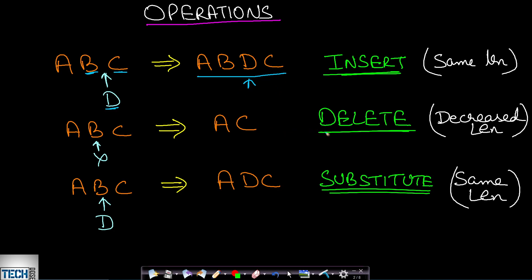If we talk about the delete operation, let's assume we are given string ABC and we want to delete character B. If we delete it, then the number of characters will decrease by 1 — that is, the string length will decrease by 1 — and B is removed in the resulting string.